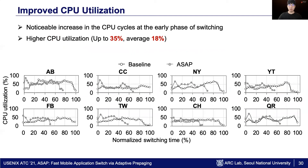Next, we evaluate the resource utilization to verify the effectiveness of pre-paging. The graph shows the CPU utilization in switch time, and the x-axis is a normalized timeline of a switch for each application. With ASAP, CPU utilization increases 35% in the best case and 18% on average. Especially, the utilization noticeably increases at the early phase of switching, and the switch finishes earlier as a result.